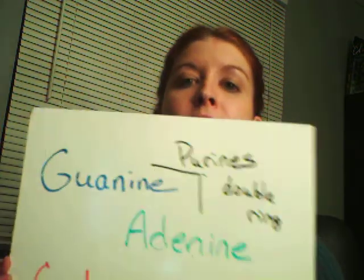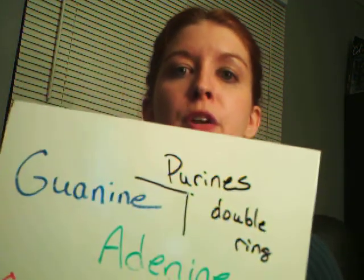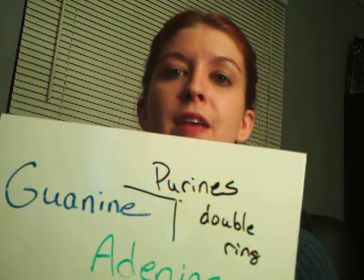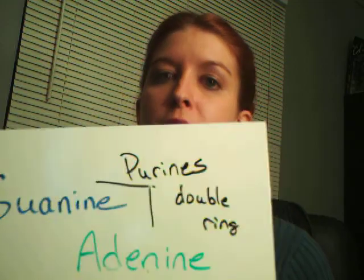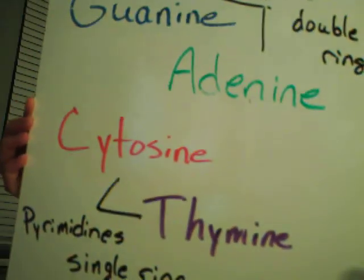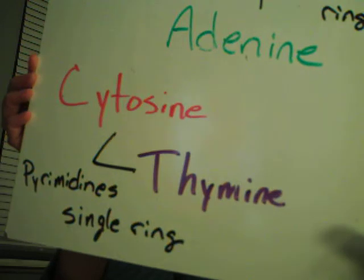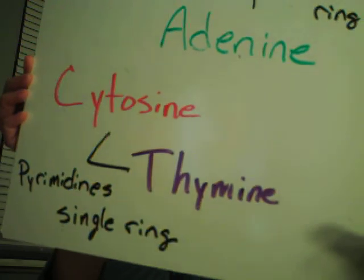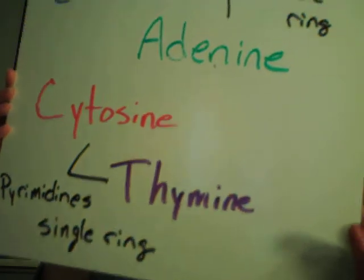Guanine and adenine are purines — they have a double ring structure. Cytosine and thymine are pyrimidines — they have a single ring structure. So: guanine and adenine, purines, double ring; cytosine and thymine, pyrimidines, single ring.